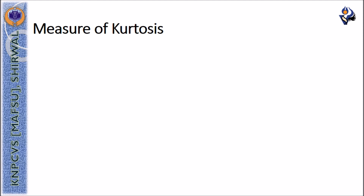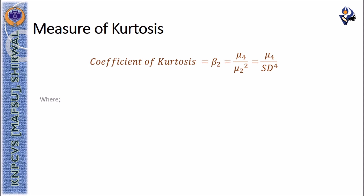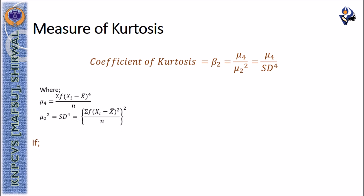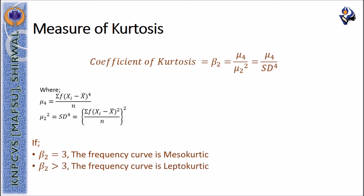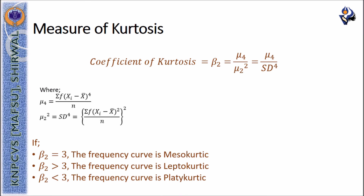The measure of kurtosis is the coefficient of kurtosis beta2, which is obtained with the formula: the 4th moment divided by the square of the second moment. If beta2 equals 3, the frequency curve will be mesocurtic. If beta2 is greater than 3, the frequency curve will be leptocurtic. If beta2 is less than 3, the frequency curve will be platycurtic.